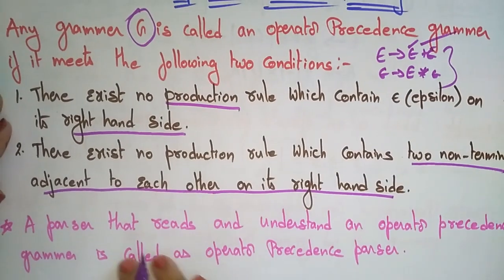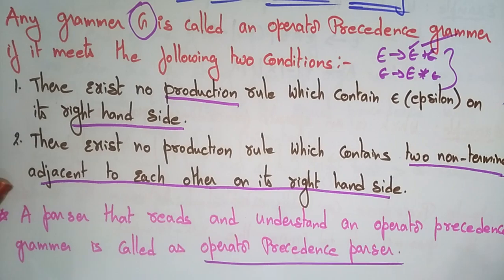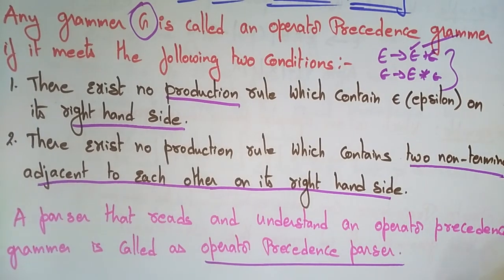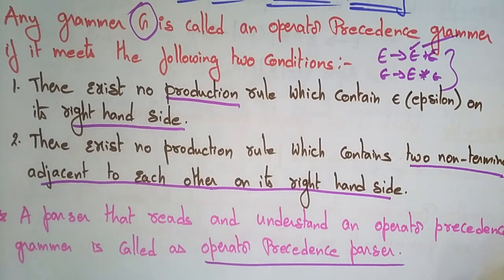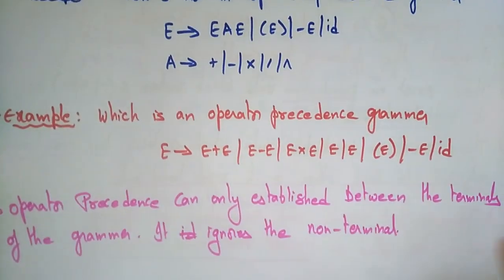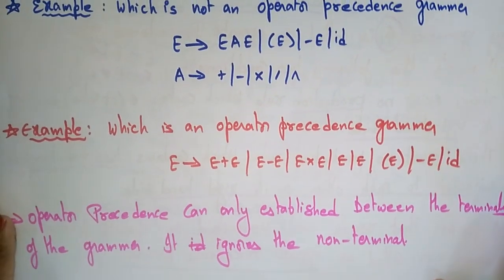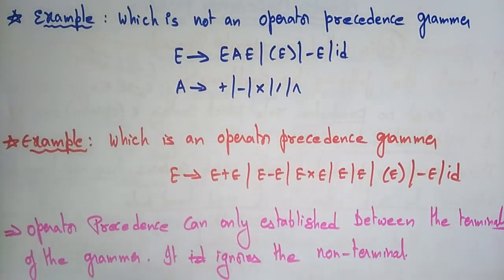A parser that reads and understands an operator precedence grammar is called an operator precedence parser. Let's see which grammar is called operator precedence and which is not, so you get a clear idea of those two conditions.